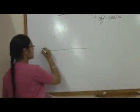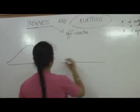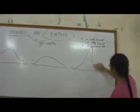I may have a distribution like that, or I may have a distribution like this, or my distribution can be like that.